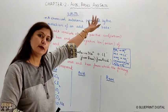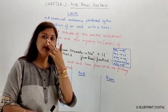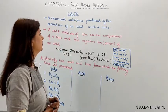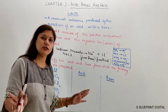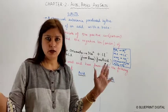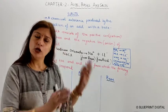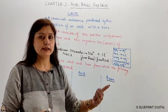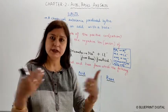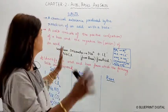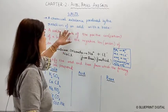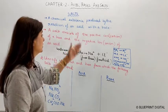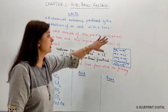We have completed acids and bases, now we will take salt. The first thing you should know is: salt is a chemical substance produced by the reaction of an acid and a base. It is a very simple concept. We will learn a lot about salts. We have learned about acid and base reactions, so when we react an acid and a base, we make salt. A chemical substance is produced by the reaction of an acid and a base.